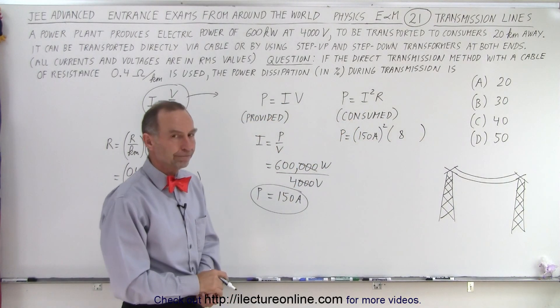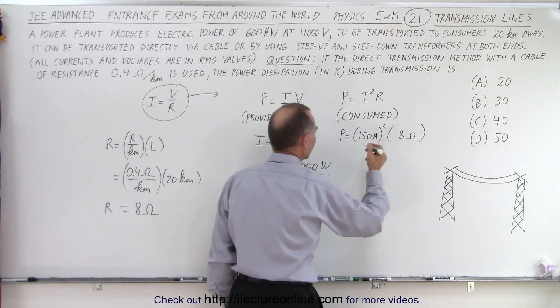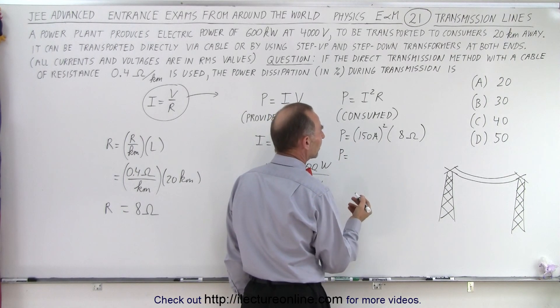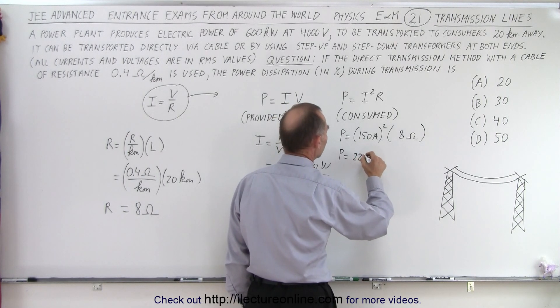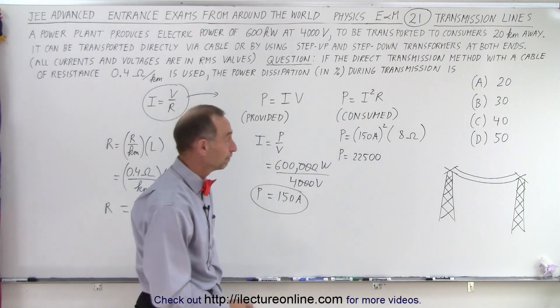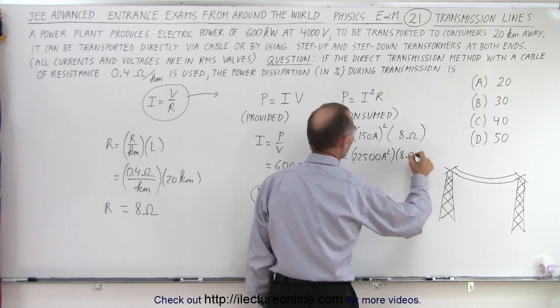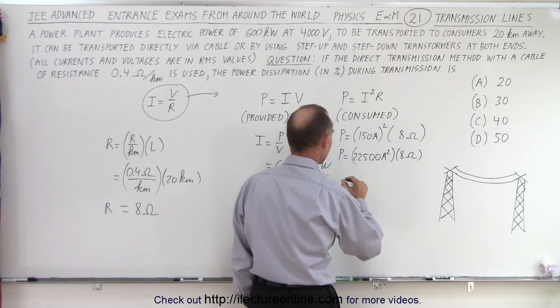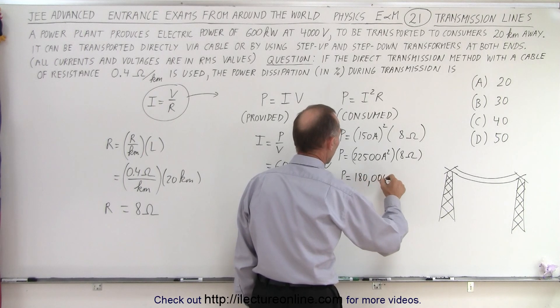No calculators - you're not allowed calculators on the JEE Advanced test. So power is equal to, what's 15 squared? Well that's 225, so that's 22,500 amps squared. Multiply it times 8 ohms, so 8 times this, that's 180. So power equals 180,000 watts.